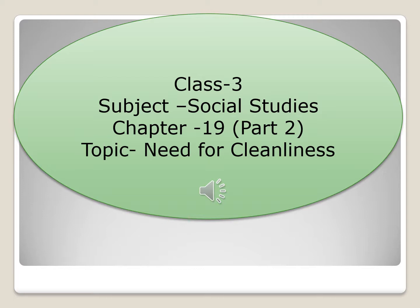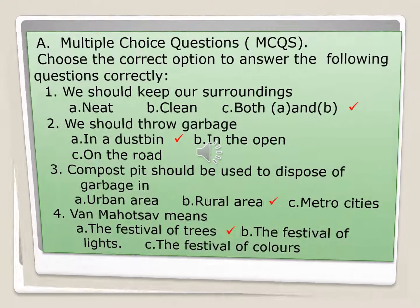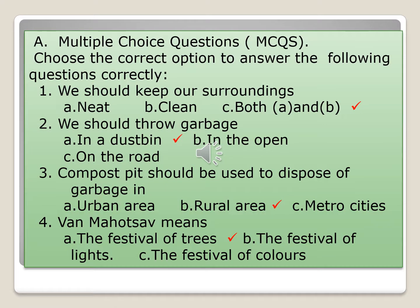In this chapter we will complete all the exercises. Our first exercise is multiple choice questions — MCQs. Choose the correct option to answer the following questions. The first one is: we should keep our surroundings — with options neat, clean, or both A and B. The correct answer is both A and B.